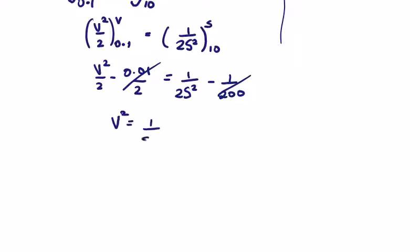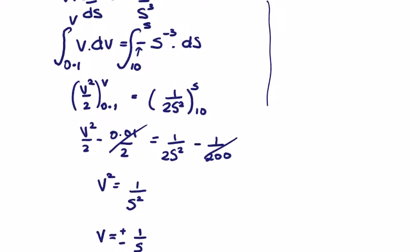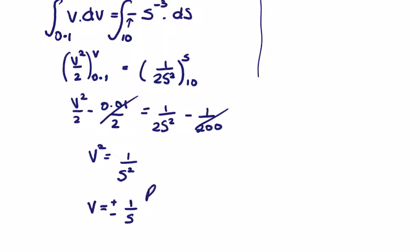So the square root of both sides, v is equal to 1 over s. That would be the plus or minus version. So which one is correct? v is 0.1, s is 10, so we have to reject the negative.